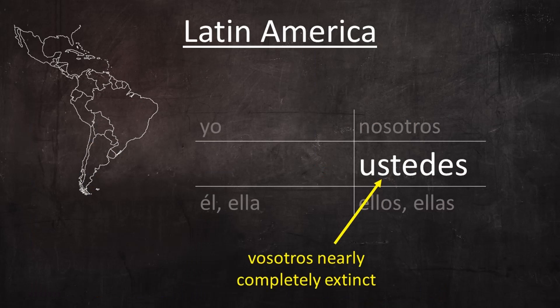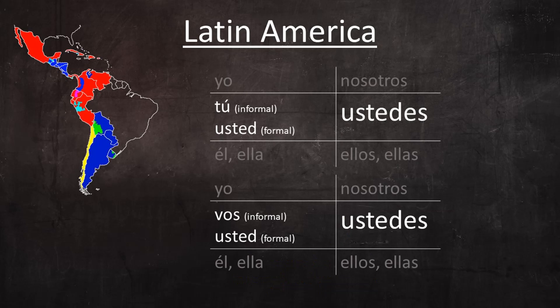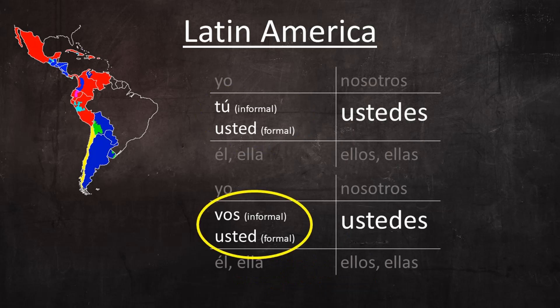In Latin America, vosotros is nearly completely extinct. It appears only in religious contexts, educational and governmental documents and ceremonies, and other very formal contexts with archaic customs. With regard to the second-person singular pronouns, in about half of Latin America they follow the pattern of Spain and use tú as the familiar pronoun and usted as the formal pronoun. In the other half they use vos as the familiar pronoun and usted as the formal. This phenomenon is called voseo, and I have a series of four videos explaining it — I recommend you watch that series.